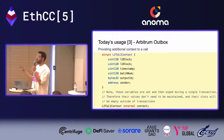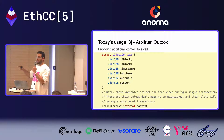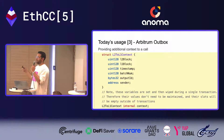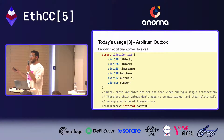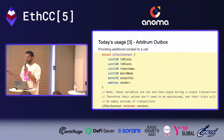Another usage is the Arbitrum outbox. When executing a transaction sent from L2 to L1, they put the context of the L2 transaction into storage, make the L2-to-L1 call, and then delete it from storage. This surfaces the L2 context to the L1 transaction without making any assumptions about the interface of the contract being called.